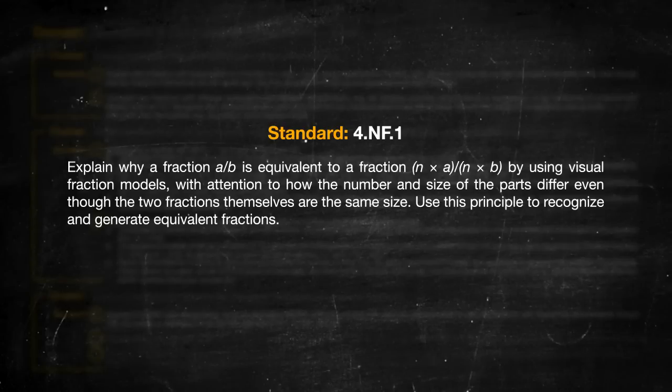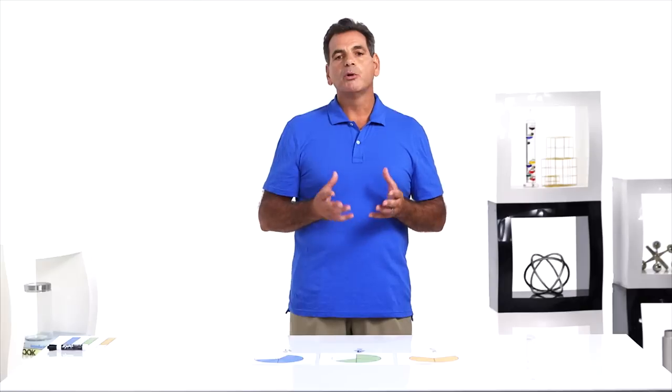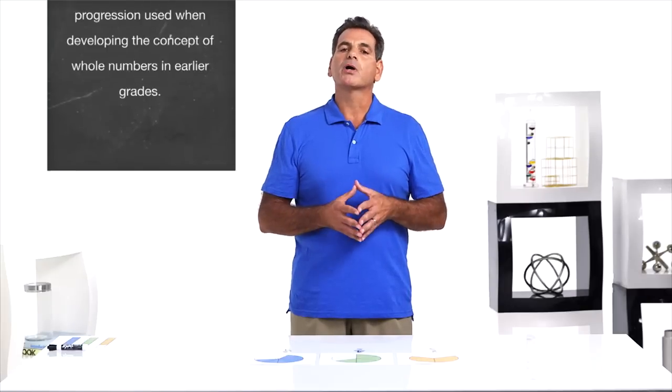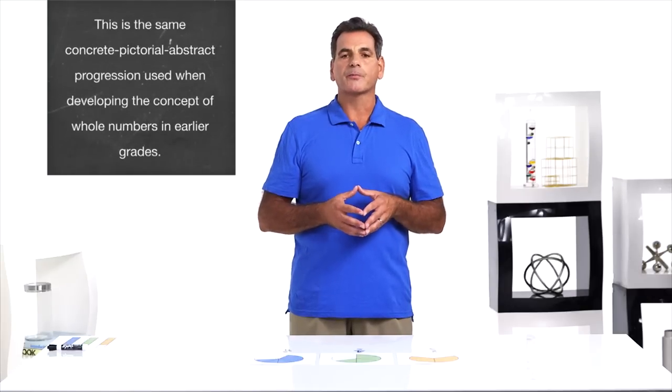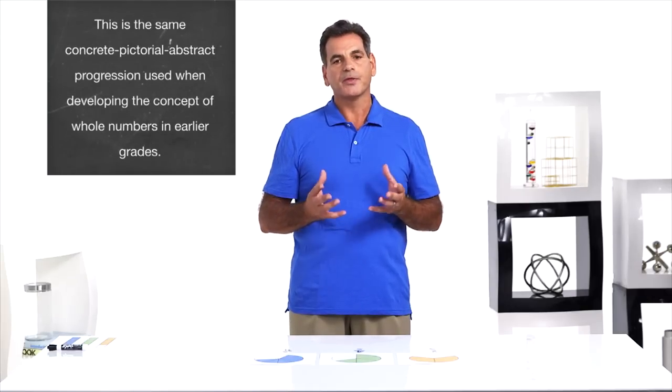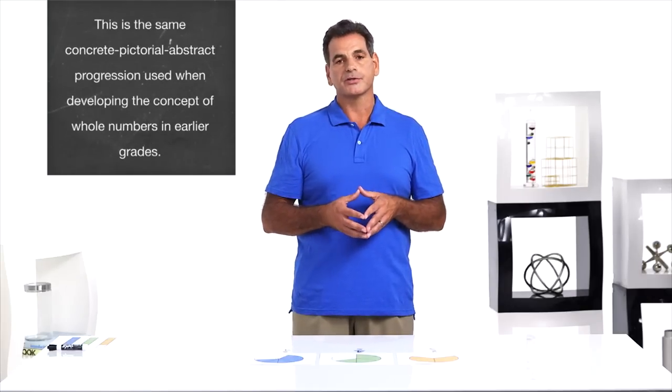In this standard, students move from the work they did with visual models and equivalent fractions in third grade to understanding that multiplying the numerator and the denominator by the same number will create equivalent fractions. We will move students through a concrete, pictorial, abstract progression to help them discover this relationship.